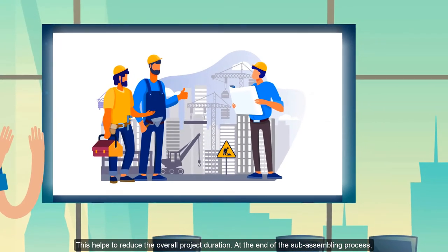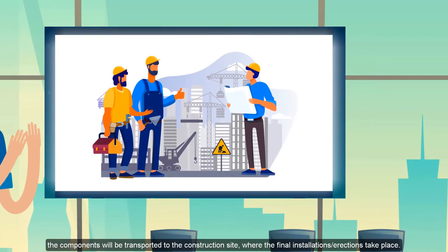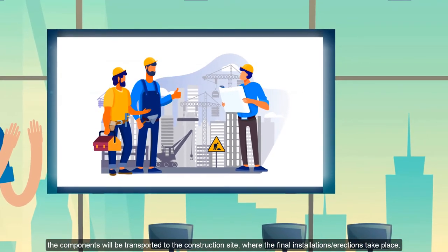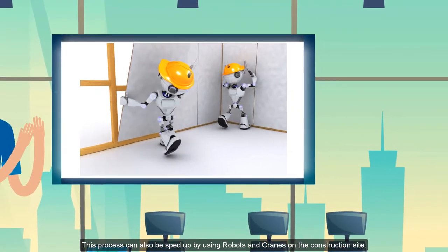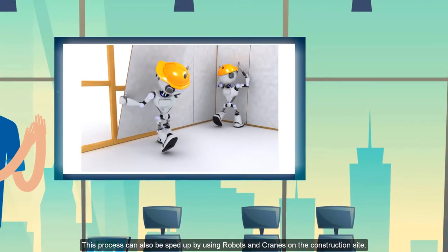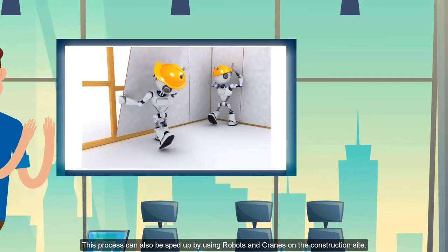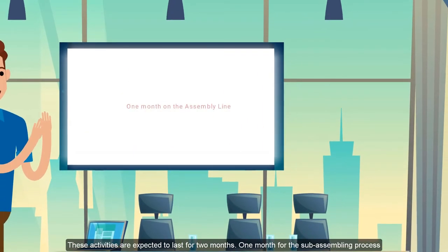Once we are done with the assembly, we transport the sub-assemblies to the construction site where the final installation and erections take place. We can speed up this process with the use of digital tools like robots and cranes to help speed up processes on the construction site.